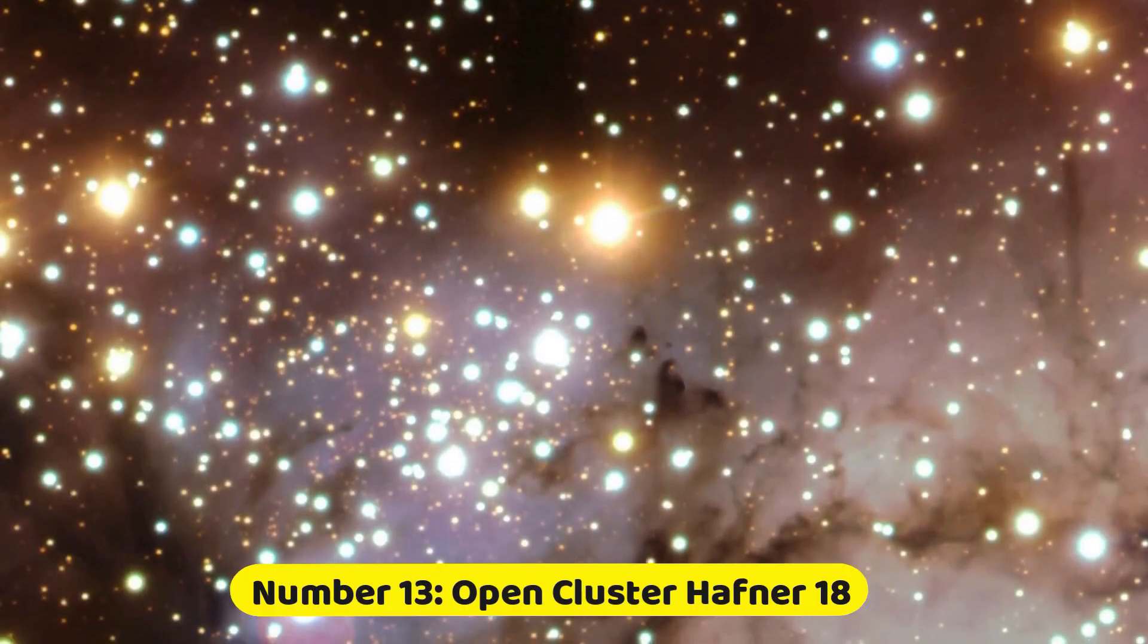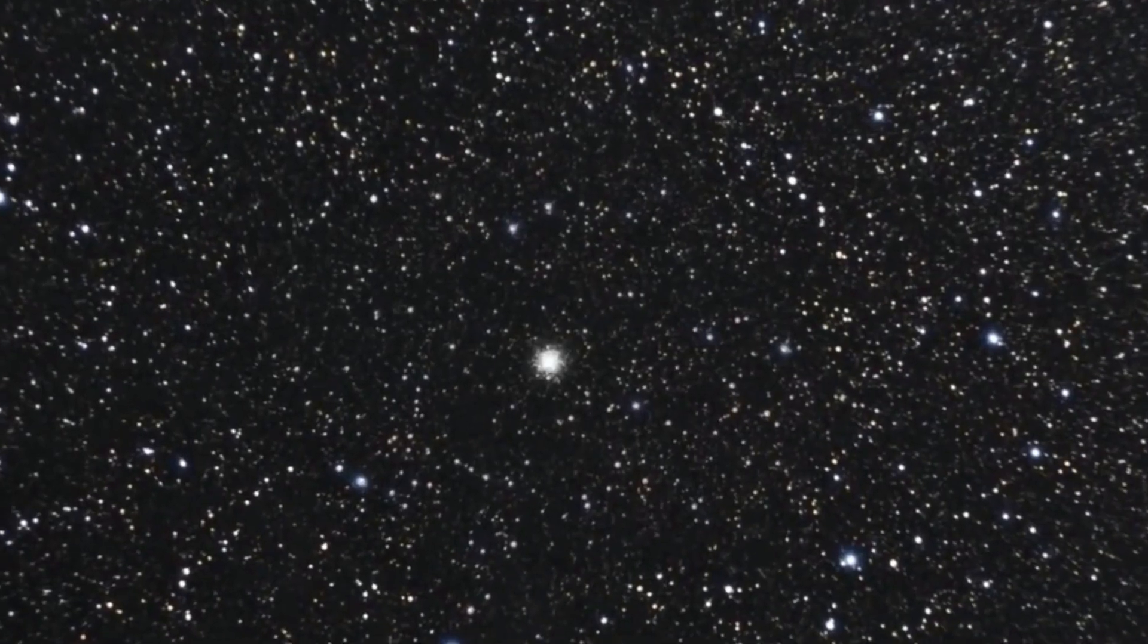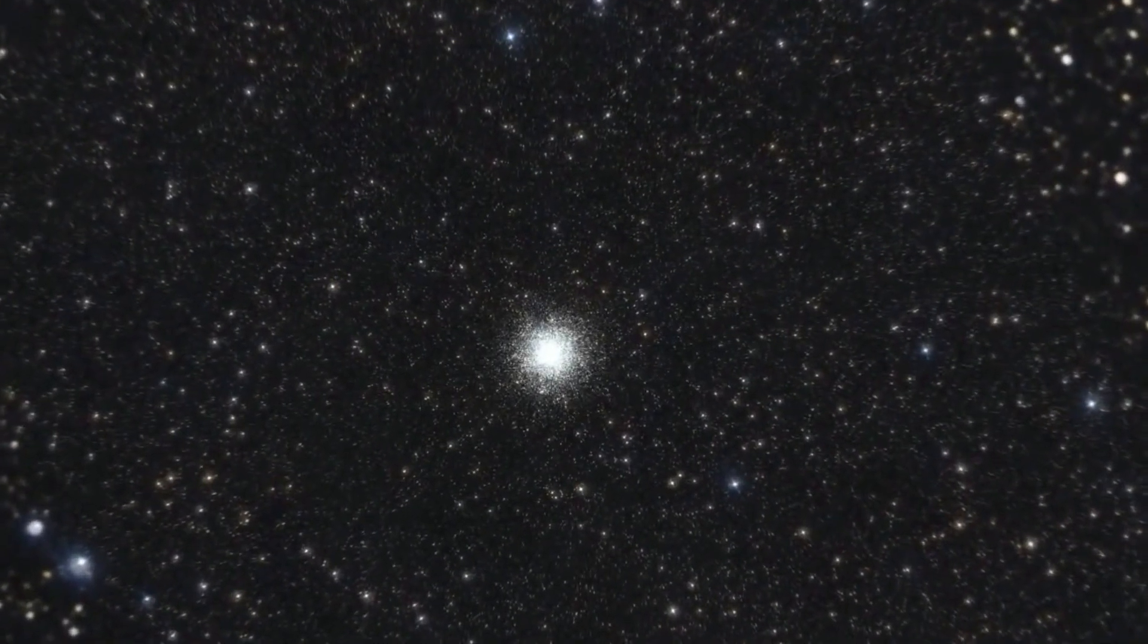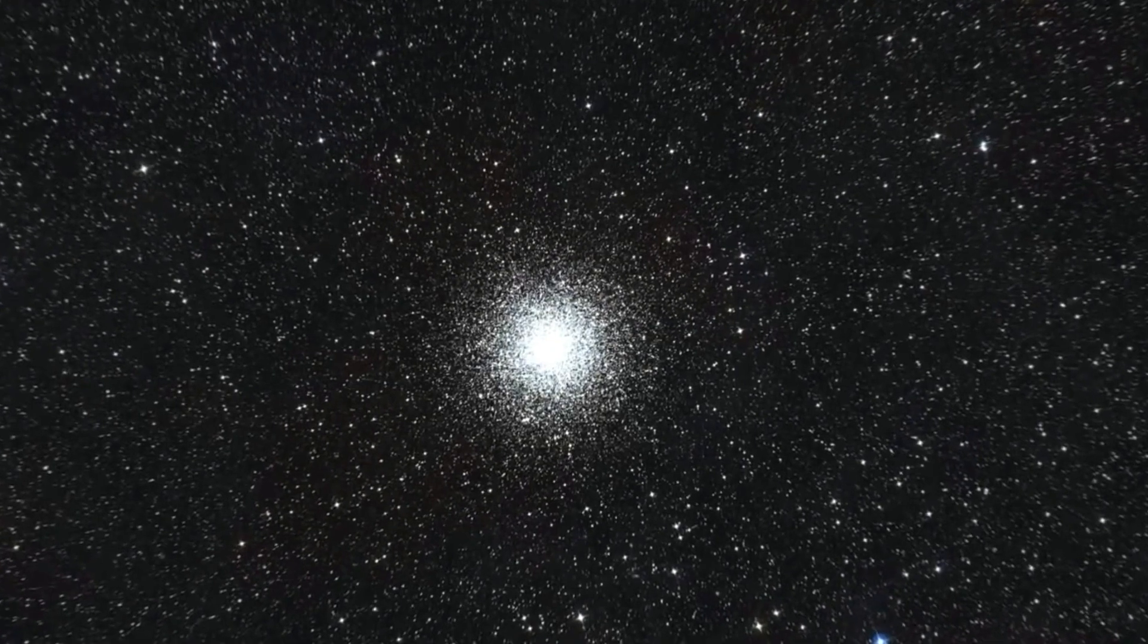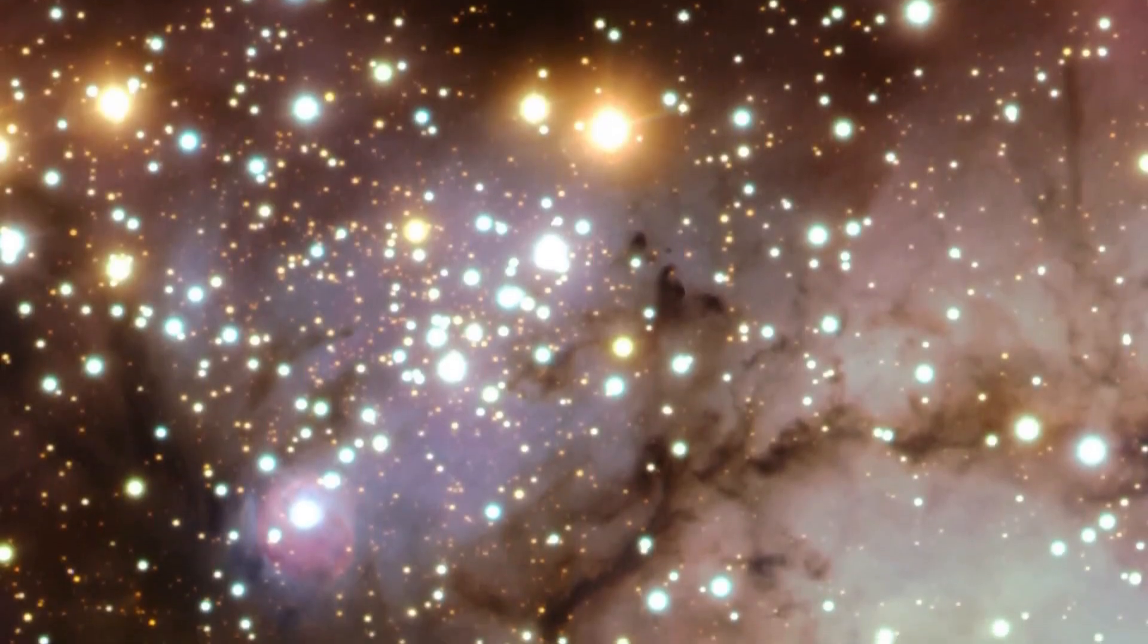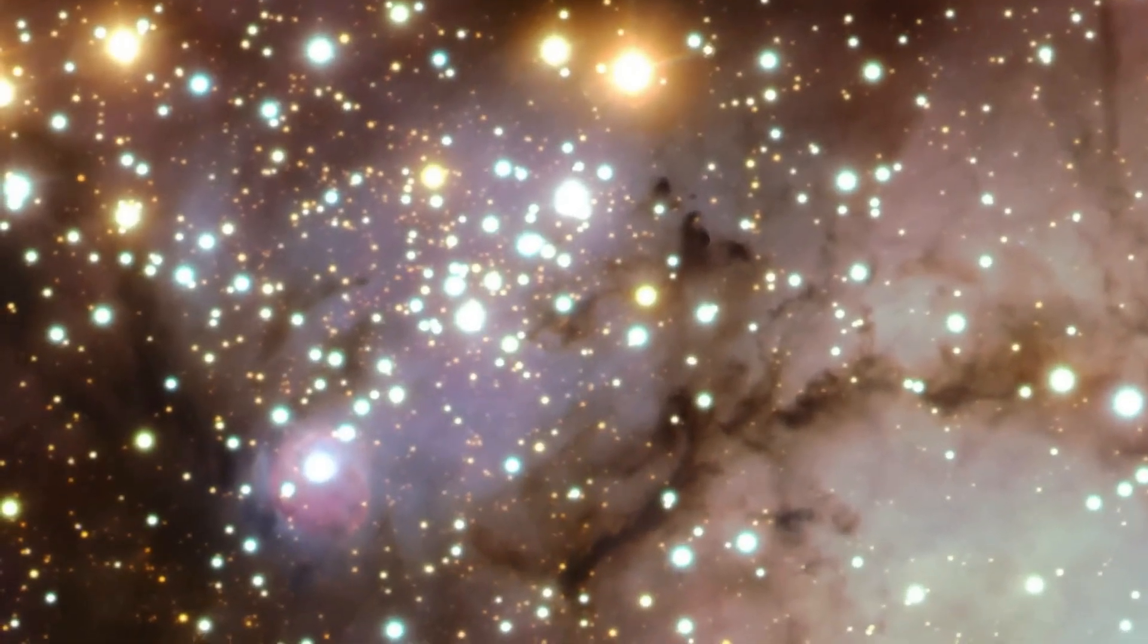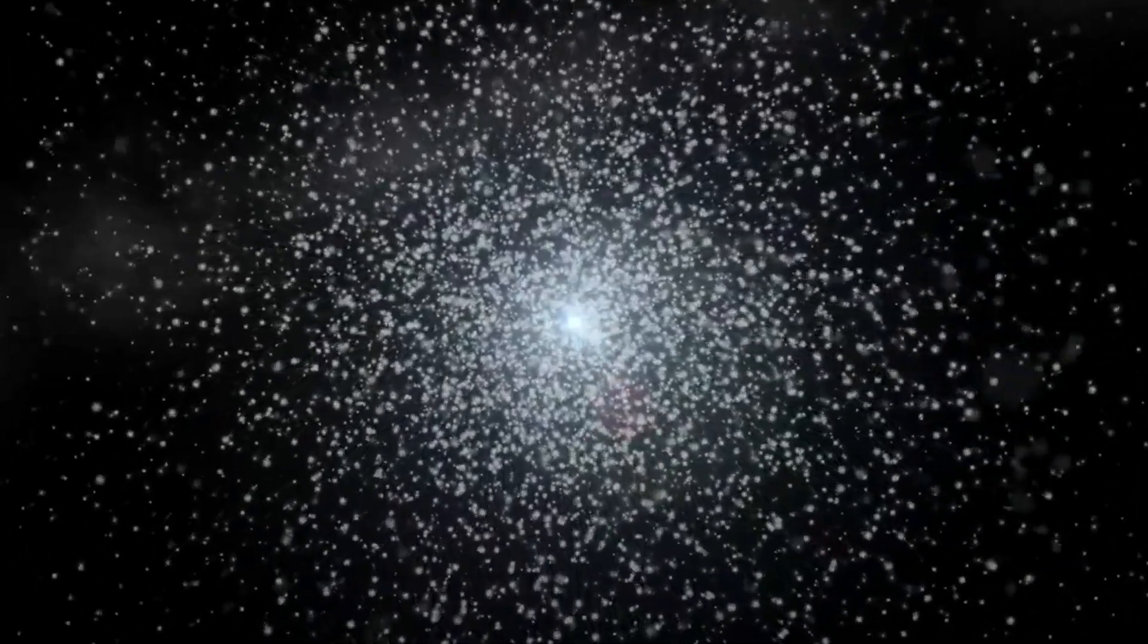Number 13. Open Cluster Hafner 18. Hafner 18 is a mature open cluster of stars that have already dispersed into their birth nebulae, representing the end result or recent past of the star formation process in the center region of the image. Within the cluster's bottom left corner, a newborn star can be seen breaking free from its nascent cocoon of gas, providing insight into the ongoing star formation process.